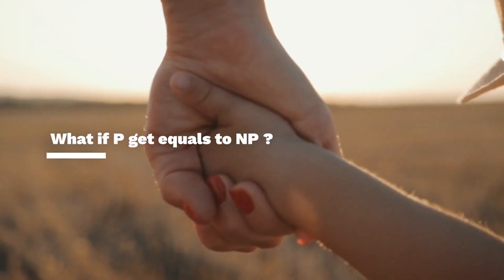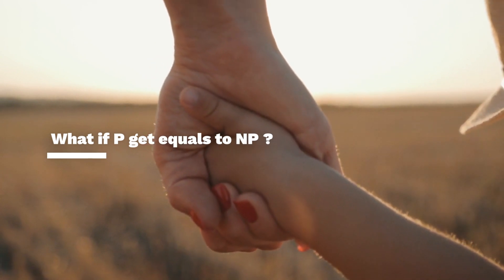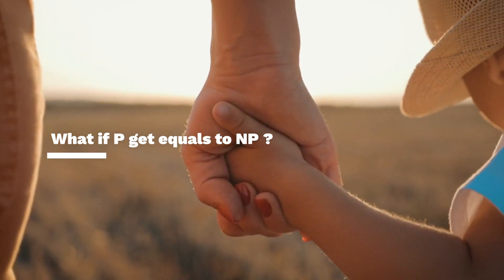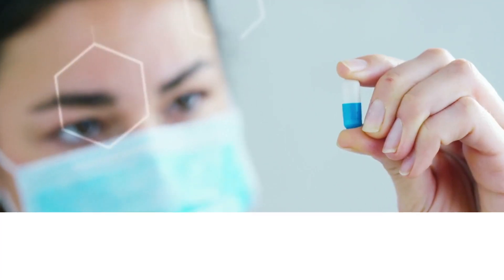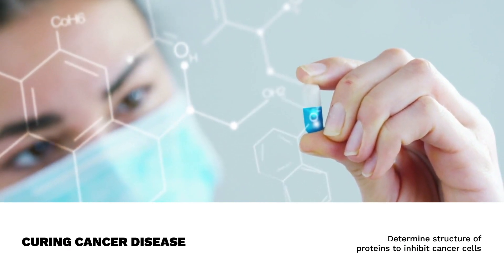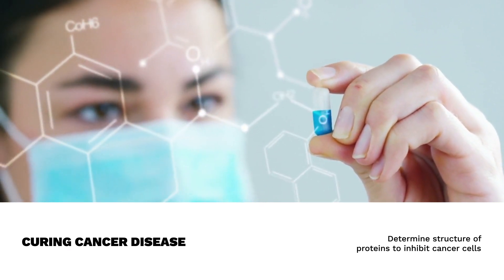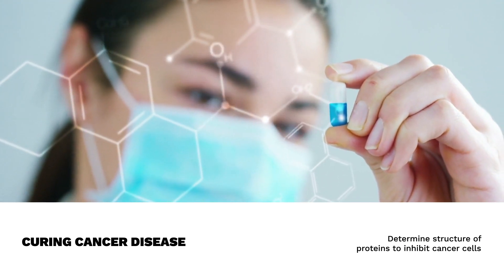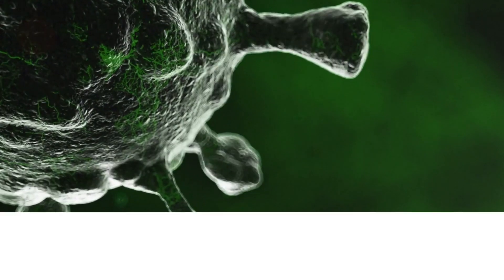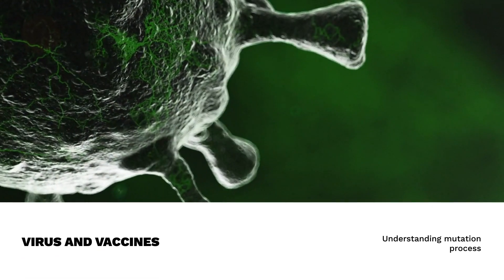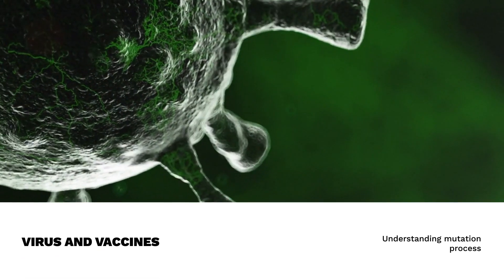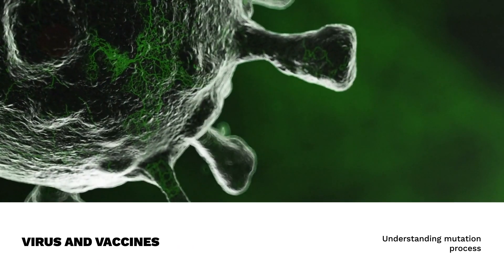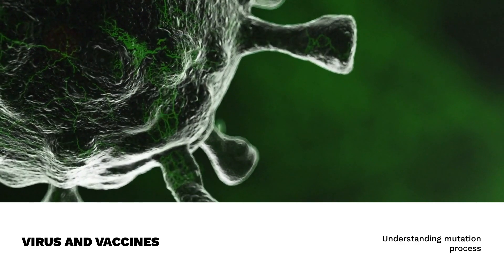There are a few life-critical NP type of problems which, if solved — that means if P gets equal to NP — can help in saving human lives. For example, curing a cancer disease. If P gets equal to NP, then we would be able to find out the exact shape of a protein that would inhibit cancer cells and prevent healthy cells, thereby saving humans from cancer. Also, protecting ourselves from viruses: if we are able to find out how a virus mutates and what all possible shapes it can take, then it would be easy for us to prepare a vaccine which can protect us from any kind or shape of virus in the future.